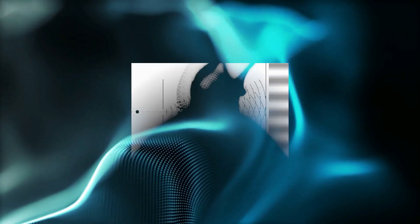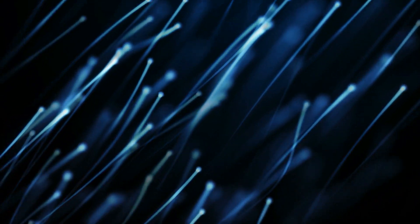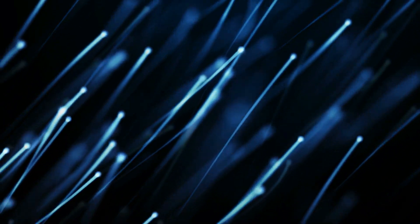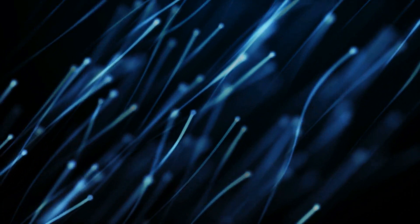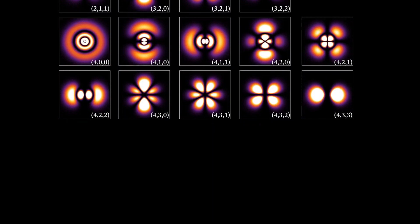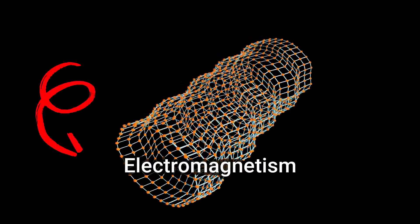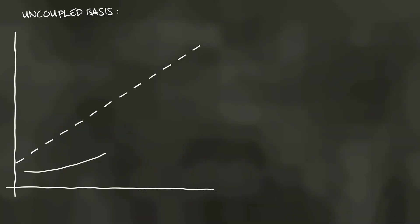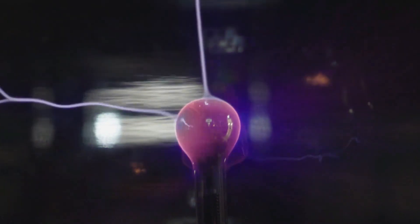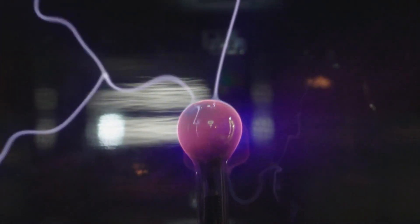The wave-particle duality, shown in experiments like the double-slit one, revealed the built-in uncertainty of the quantum level. As physicists dealt with the implications of quantum mechanics, a big challenge came up: merging quantum principles with field descriptions. Classical field theories, such as electromagnetism, needed a quantum version to handle particle behavior at the quantum scale. This led to the creation of quantum field theory.